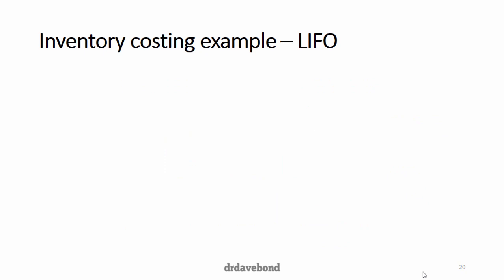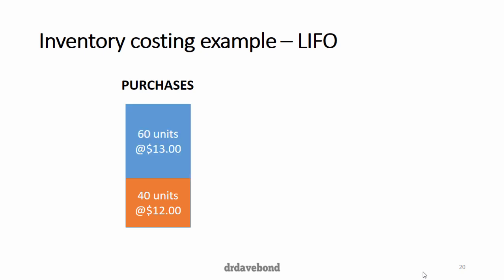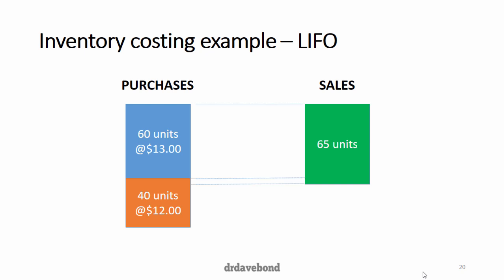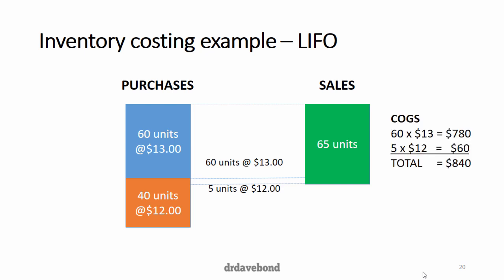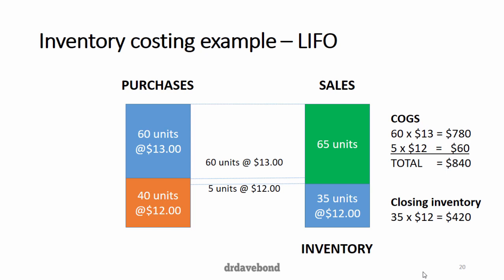Under LIFO, starting with the same 40 and 60 units, when 65 units are sold we sell from the last units down: 60 units come from the $13 batch and 5 from the $12 batch. Cost of goods sold is $840 — note this differs from FIFO. What's left in inventory is 35 units at $12, giving closing inventory of $420.